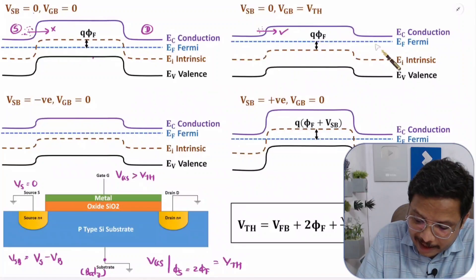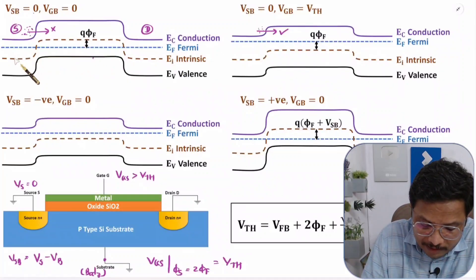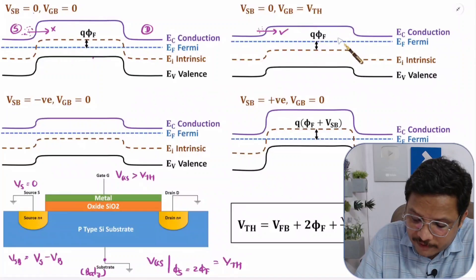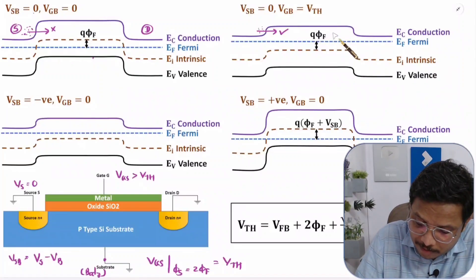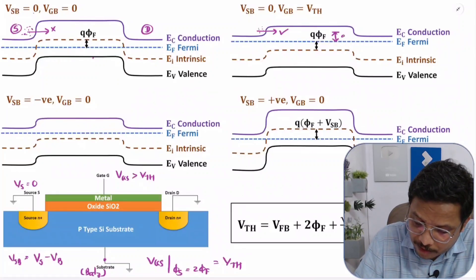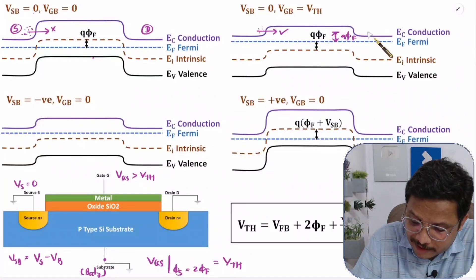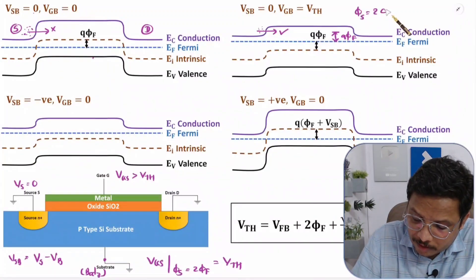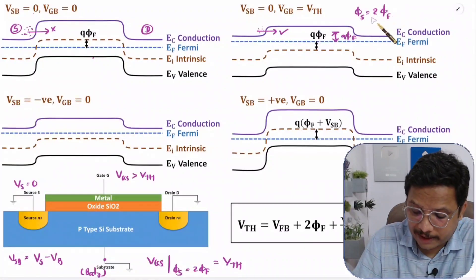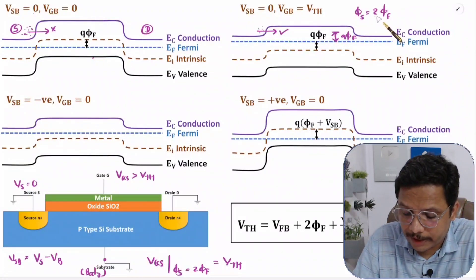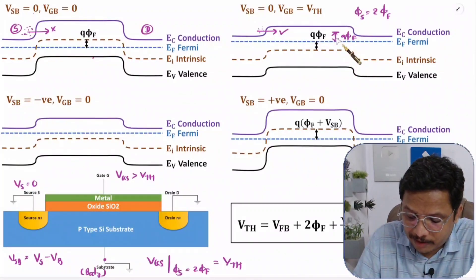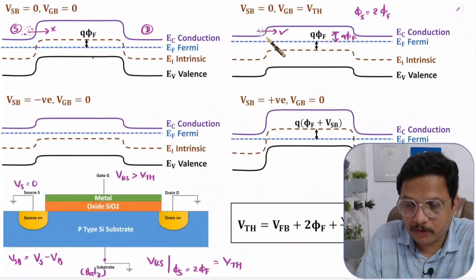At the gate we are applying threshold voltage. In the energy band diagram, the intrinsic energy is now below the Fermi level by q·φf, whereas previously it was above by q·φf. So the total change in surface potential is 2φf, and in terms of energy it is 2·q·φf. This energy gap shift means less resistance to electrons for motion.